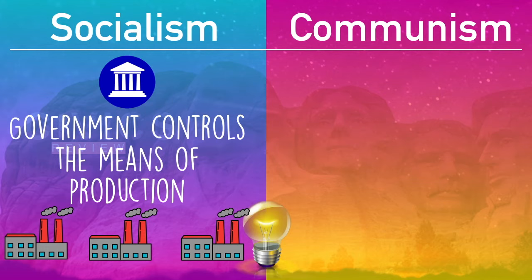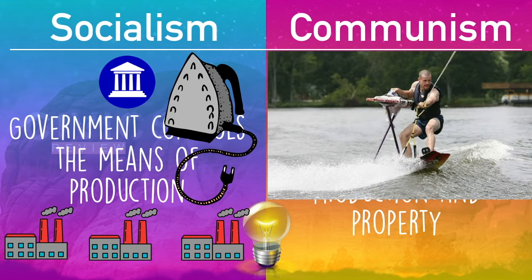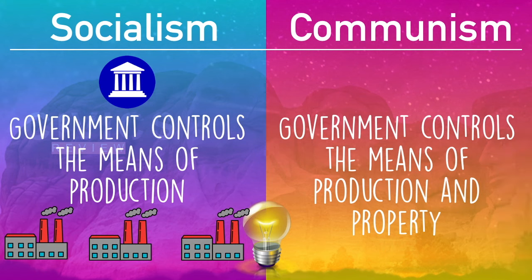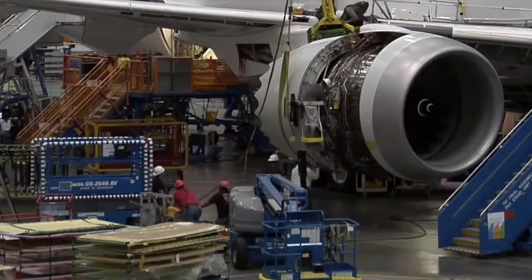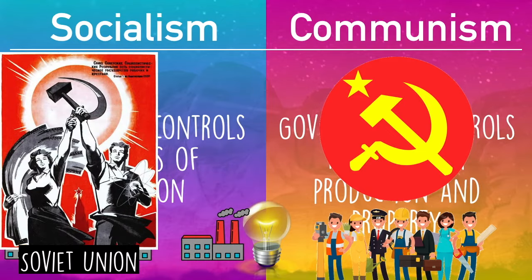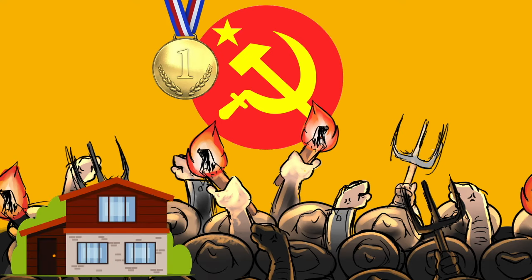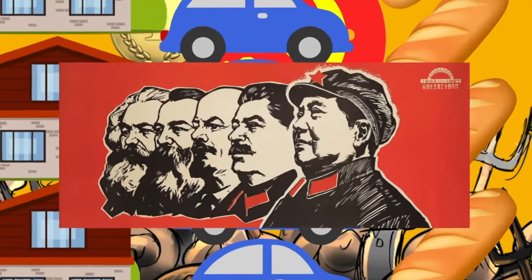Finally, we have communism, where the government not only controls the means of production but also controls everyone's property. Think of socialism as ironing and communism as extreme ironing — it takes everything socialism does to the max. The communist symbol of the sickle and hammer represents the working class. Governments like the Soviet Union and the People's Republic of China told laborers: if we take over the government, everybody will have the same — a house, a car, food, clothes, everything provided by the government. The problem is, historically, the leaders of these governments oftentimes kept the wealth for themselves and shared very little with the people.